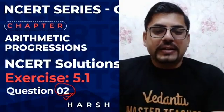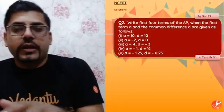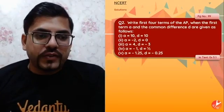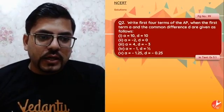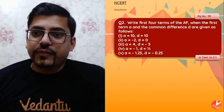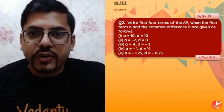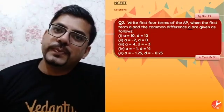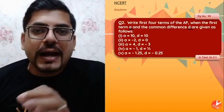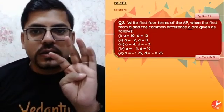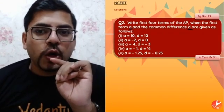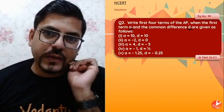So let's start. Here is the question: Write the first four terms of the AP when the first term A and the common difference D are given as follows. Matlab aapko AP ka pehle 4 terms likhne hain agar first term diya hua hai aur common difference diya hua hai.